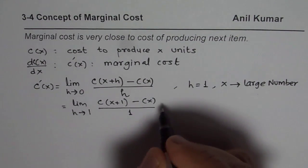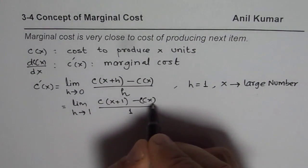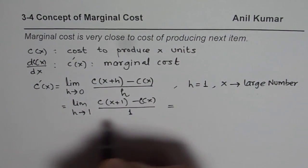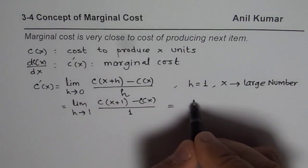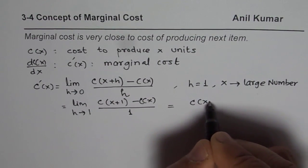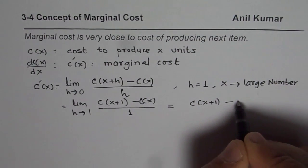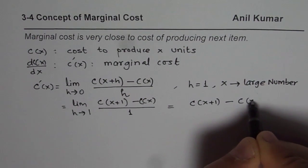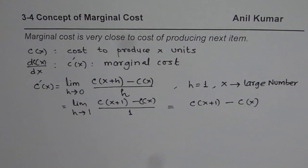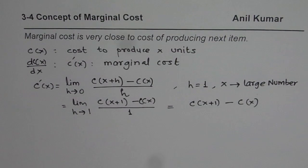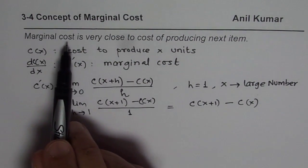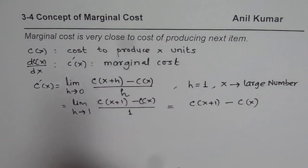So we are replacing H with 1. What really happens is, for large production numbers, we get an expression which is the cost of X plus 1 items minus cost of X items. That means if n is the number of items we are talking about, then the cost of the nth item is very close to the marginal cost. So marginal cost is very close to the cost of producing the next item.